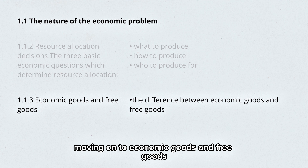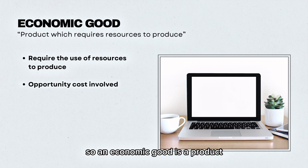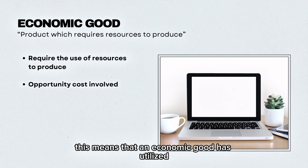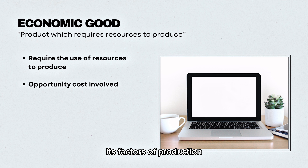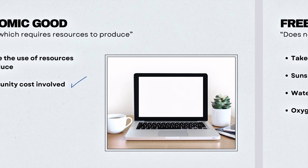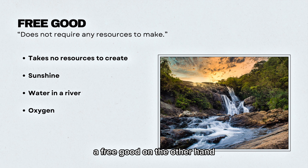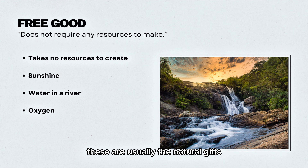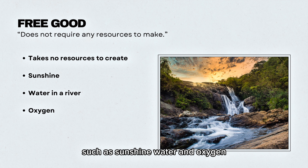Moving on to economic goods and free goods. An economic good is a product which requires resources to produce, meaning it has utilized its factors of production, and therefore an opportunity cost has been involved. A free good, on the other hand, does not require any resources to make. These are usually the natural gifts the earth has to offer, such as sunshine, water, and oxygen.